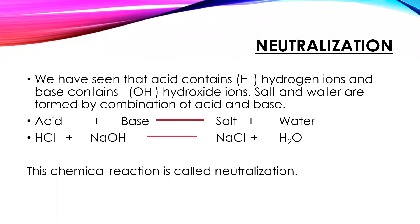Neutralization: Acid contains H+ hydrogen ions and base contains OH⁻ hydroxide ions. Salt and water are formed by combination of acid and base: Acid + Base → Salt + Water. That is, hydrochloric acid plus sodium hydroxide equals sodium chloride plus water (HCl + NaOH → NaCl + H₂O). This chemical reaction is called neutralization.